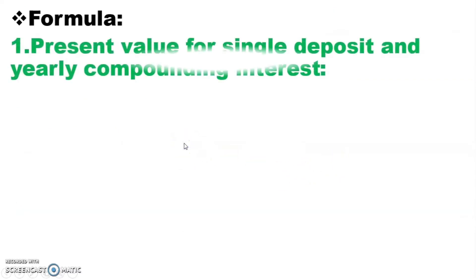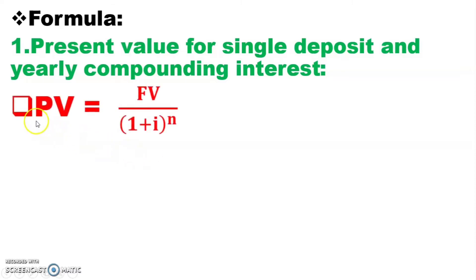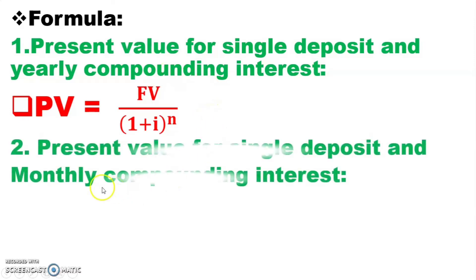Let's practice the two formulas. Formula number one: present value for single deposit and yearly compounding interest. Single deposit means we return from our investment one time, and we also deposited our investment one time — that means one return or one deposit. The formula is: PV equals FV divided by (1 plus i) to the power n, for single deposits and yearly compounding interest.